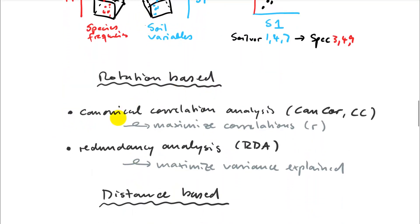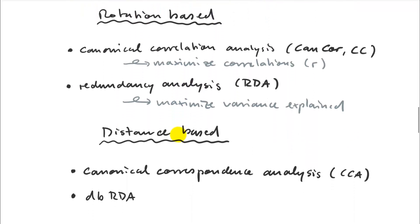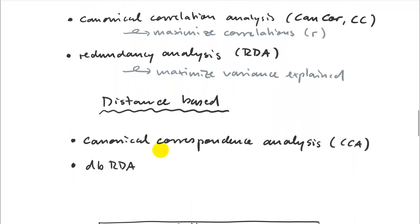Canonical correlation analysis maximizes the correlation coefficients. Redundancy analysis is almost identical but maximizes variance explained — the R-squared — so it doesn't really matter which one you use. And then you have distance-based versions as well, working with distance-based ordinations. Those are canonical correspondence analysis and distance-based redundancy analysis.